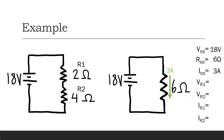Now we take that knowledge and apply it to our original circuit. In the equivalent circuit there are 3 amps coming out of the power supply, so there must also be 3 amps in the original circuit. That current only has one path, so all of it flows through R1 and continues through R2. So there are 3 amps flowing through R1 and 3 amps flowing through R2.